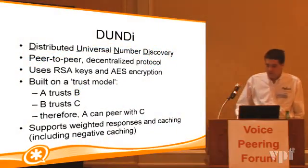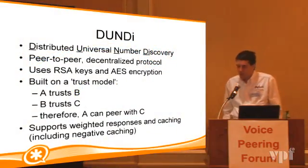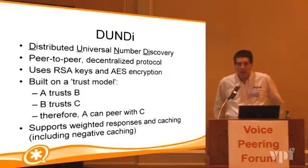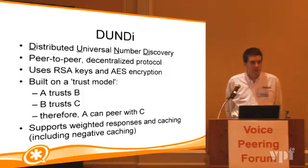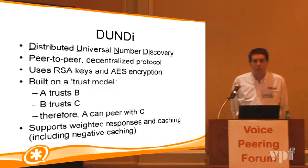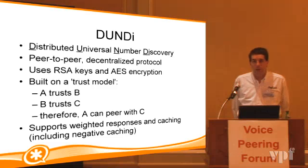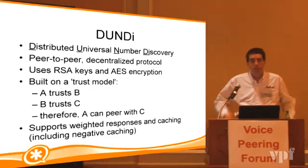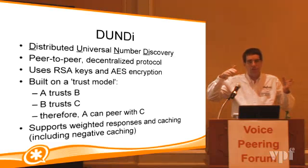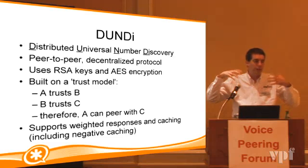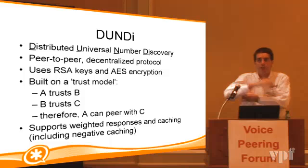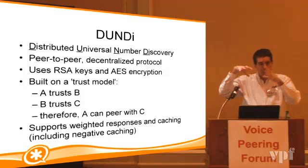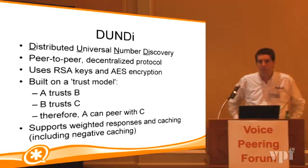Another area that becomes an issue when you build a network of multiple Asterisk servers is how do you figure out how to route calls among your servers? Because at any one time, there are different users registered to different servers, or if it's in an enterprise, you have different offices spread around the world and they have different chunks of the extension numbering space belonging to those offices.